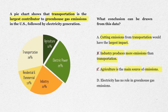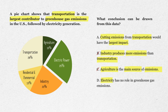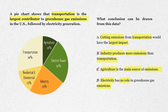Option D: electricity has no role in greenhouse gas emissions. That's definitely false — electric power is the second-largest category at 25%. Cross this one out too. That leaves us with Option A as the best choice: cutting emissions from transportation would have the largest impact.